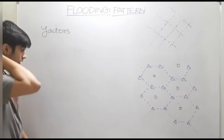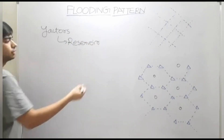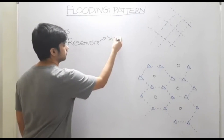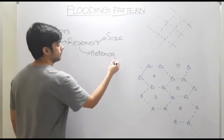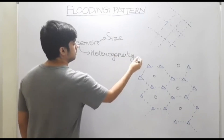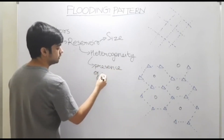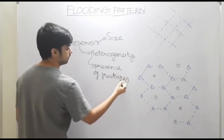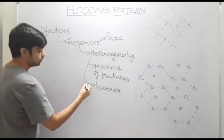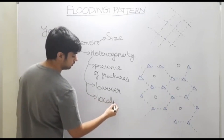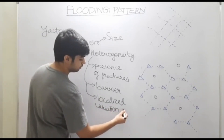Let us start with the factors involved in selection of a specific flooding pattern in a field. The factors include reservoir characteristics such as size and heterogeneity. Heterogeneity basically means the presence of fractures at different locations, presence of barriers or impermeable rocks within the reservoir.